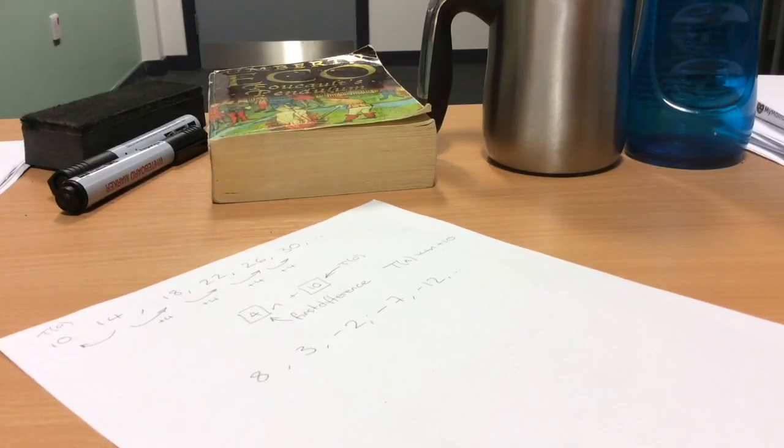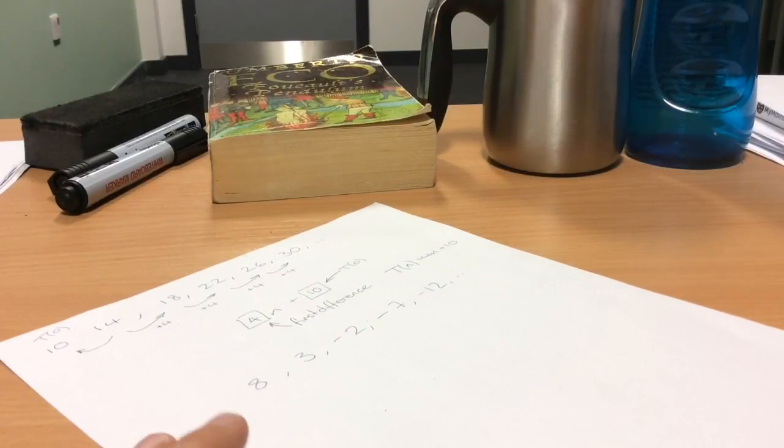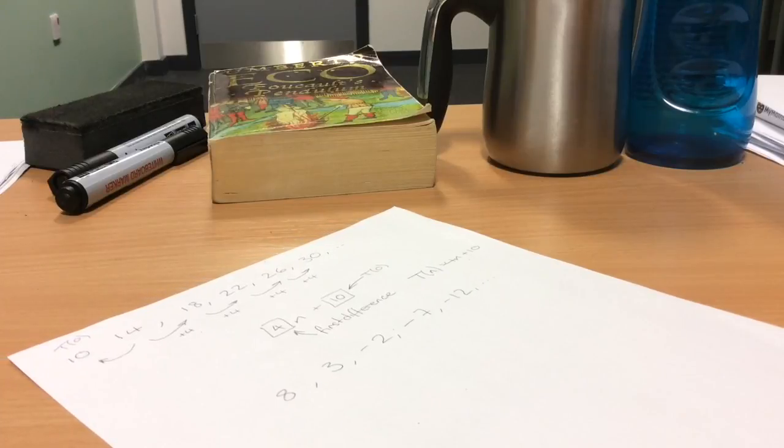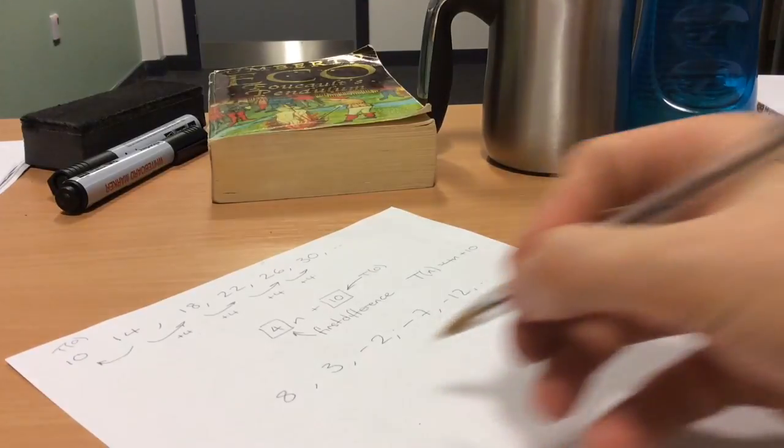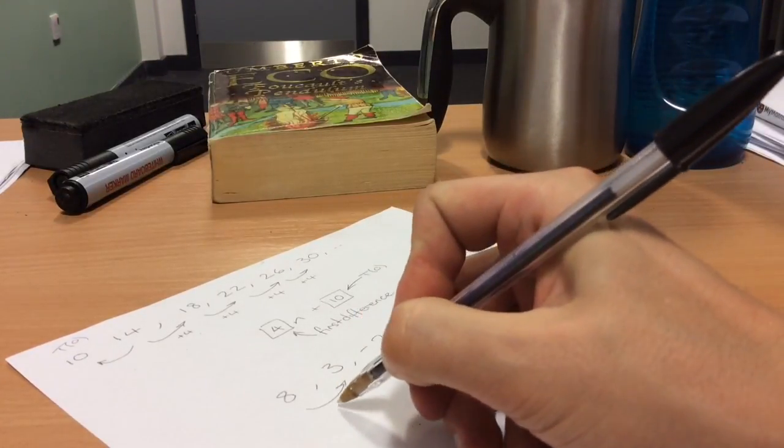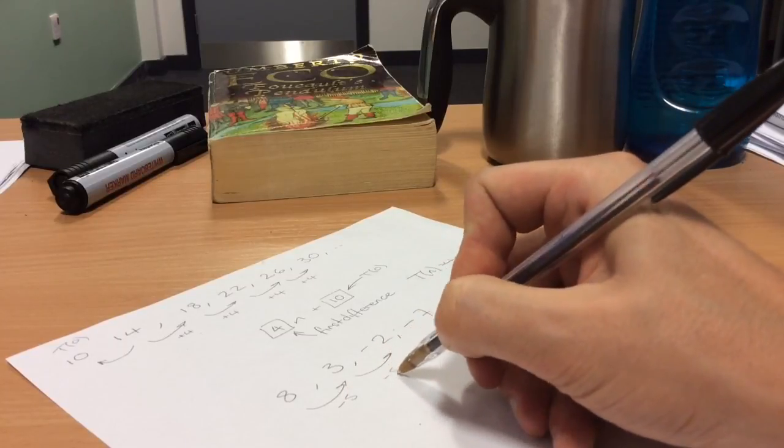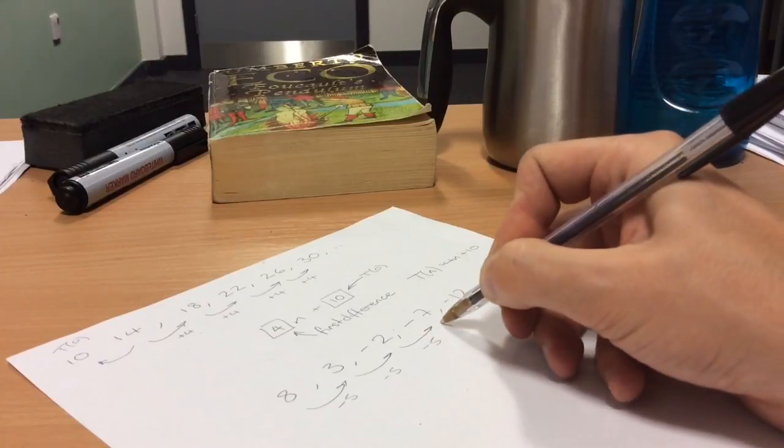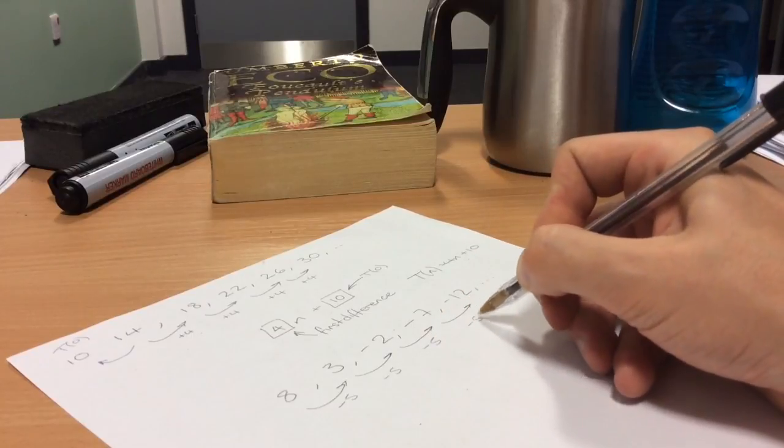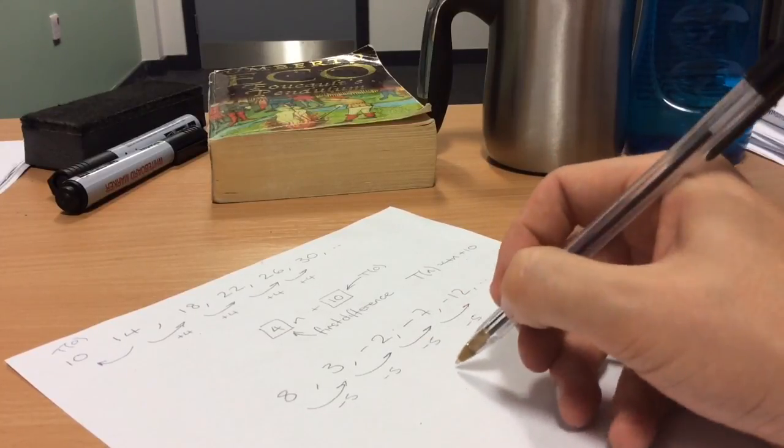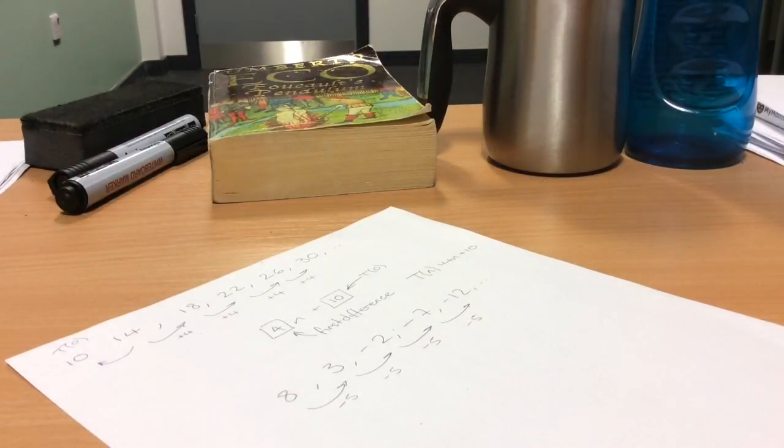Let's look at the first difference. First of all, to get from 8 to 3 we take 5. 3 to minus 2 we take 5. Minus 2 to minus 7 we take 5. Negative 7 to negative 12 we take 5. So the first difference is negative 5.